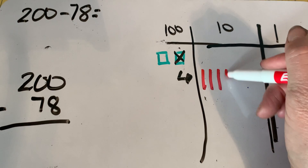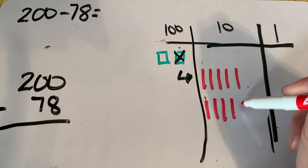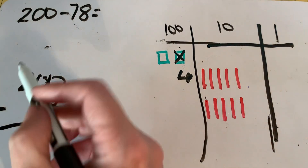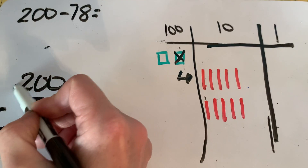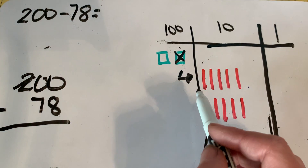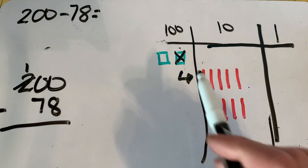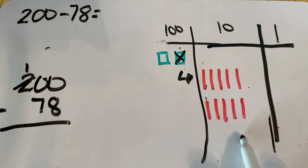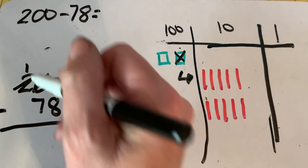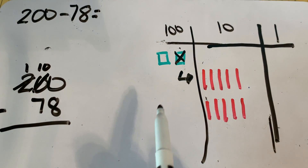We count out ten tens: one through ten. Let's write out what we did. We started with 200, we decomposed it — that leaves us with 100. We moved it over to our tens, so now instead of having zero tens, we have ten tens. We still have 200.